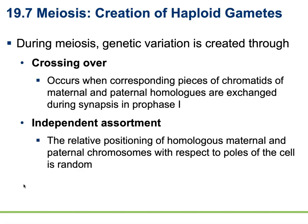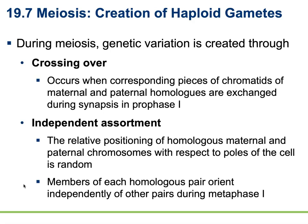Independent assortment is going to be a little bit different. The independent assortment is the relative positioning of homologues of maternal and paternal chromosomes with respect to the poles of the cell — it is random. The members of each homologous pair orient independently from others during metaphase I. Just because I got grandma's chromosome one doesn't mean I get grandma's chromosome two, three, and four. I might have grandma's chromosome one, grandpa's chromosome two, grandma's three, four, five, grandpa's six, seven, and eight. Each division could be a completely random assortment.